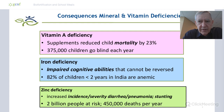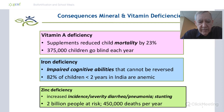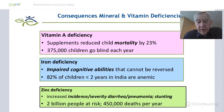Iron deficiency puts about 2 billion mothers and children at risk. It impairs cognitive abilities of children when they're young in ways that can't be reversed. 82% of children in India less than two years old are anemic, and half of that is due to iron deficiency. Similarly, about 2 billion mothers and children are at risk for zinc deficiency, which compromises the immune system, is associated with stunting, and contributes to 450,000 deaths among children each year.